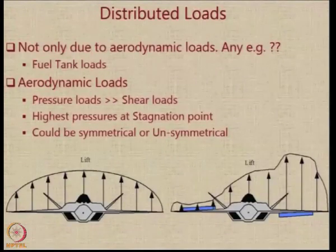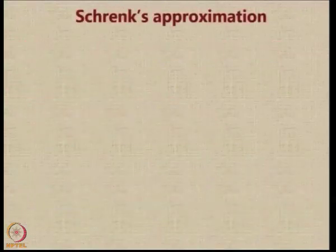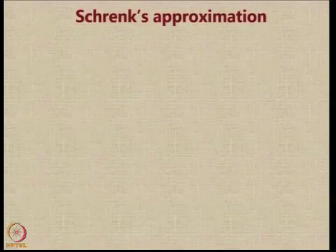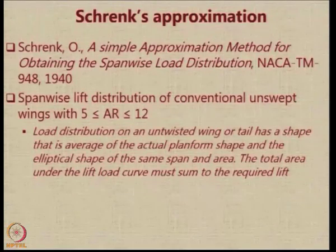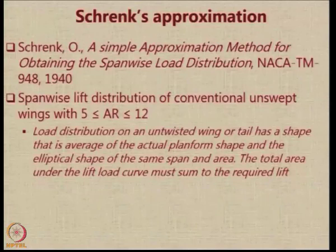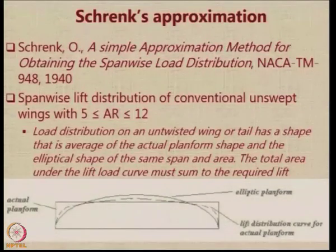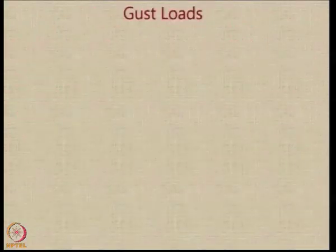Aerodynamic loads could be symmetrical or unsymmetrical. They are symmetrical when there is no deflection of control surfaces, but deflection of ailerons, for example, can give an asymmetric load. When estimating the load distribution over a wing of a given planform, one easy approximation to use is called Schrenk's approximation, applicable only for conventional unswept wings with aspect ratio between 5 and 12. This approximation says that the load distribution on an untwisted wing or tail is the average of the actual planform shape and the elliptical shape of the same span and area, with the requirement that the total area under the lift load curve must sum to the required lift.